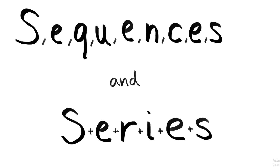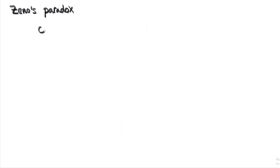Zeno wanted to prove that the world was unchanging and that motion was an illusion, and he came up with a couple of thought experiments that are now known as Zeno's paradoxes. I'm about to give you a modified version of one of those paradoxes that I think beautifully introduces the idea of an infinite sequence.